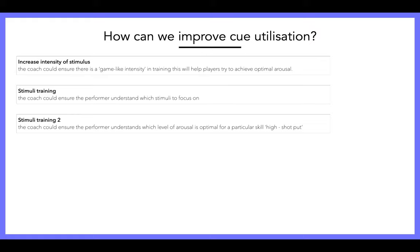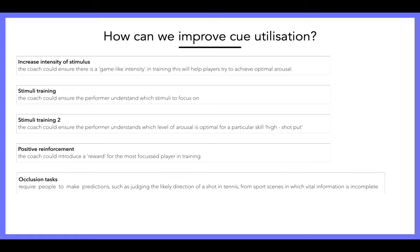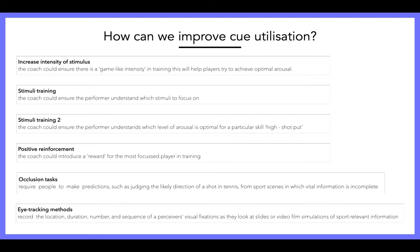For example, shot put is linked with higher arousal levels because you need a lot of power — you really need to be pumped up when trying to throw a personal best. Positive reinforcement: the coach could introduce a reward for the most focused player in training. Occlusion tasks require people to make predictions — for example, an image is presented on a screen without all the information, so you have to judge the likely direction of a tennis shot without the ball, or spot where an attacker is going to shoot a penalty from their body position.